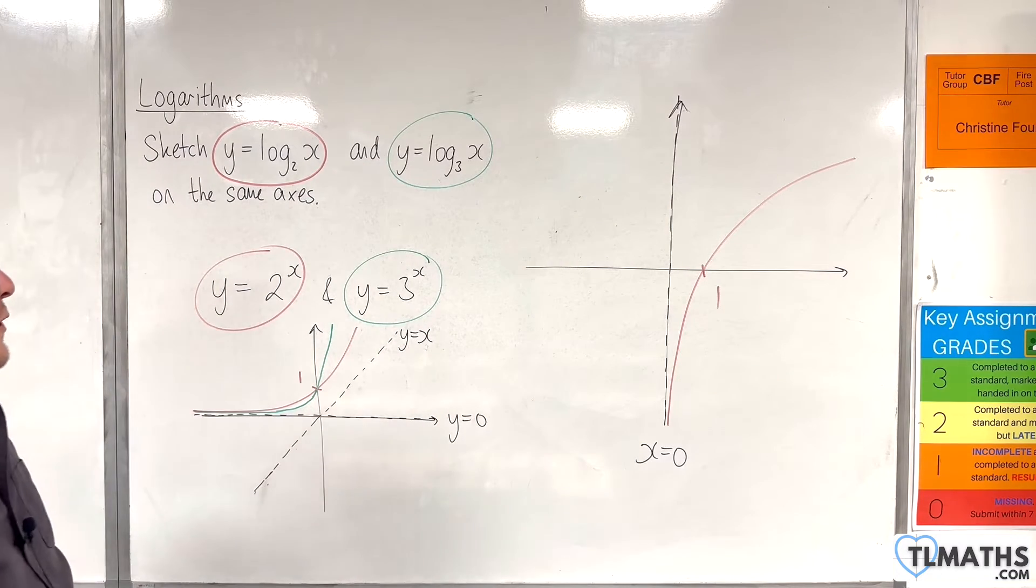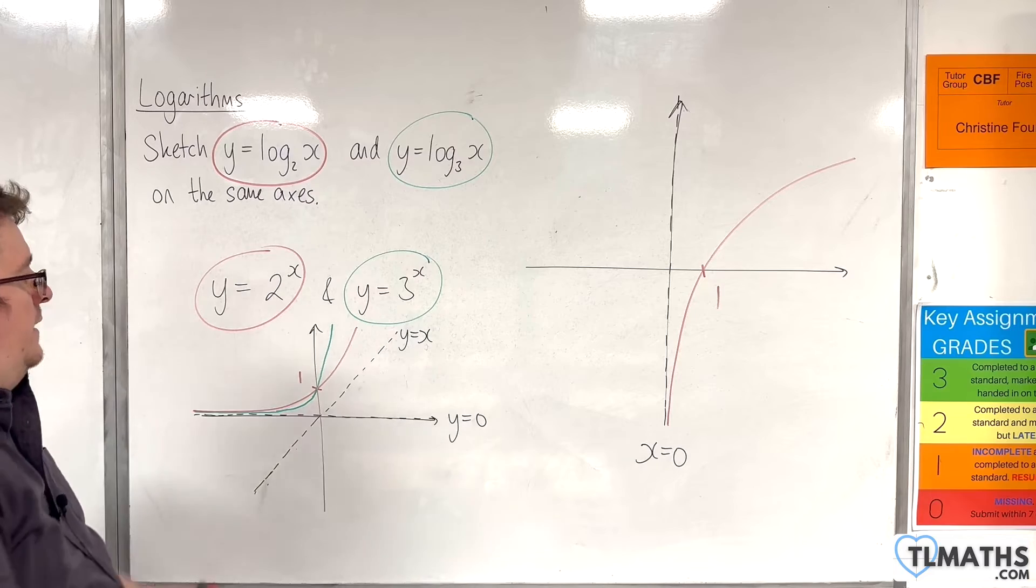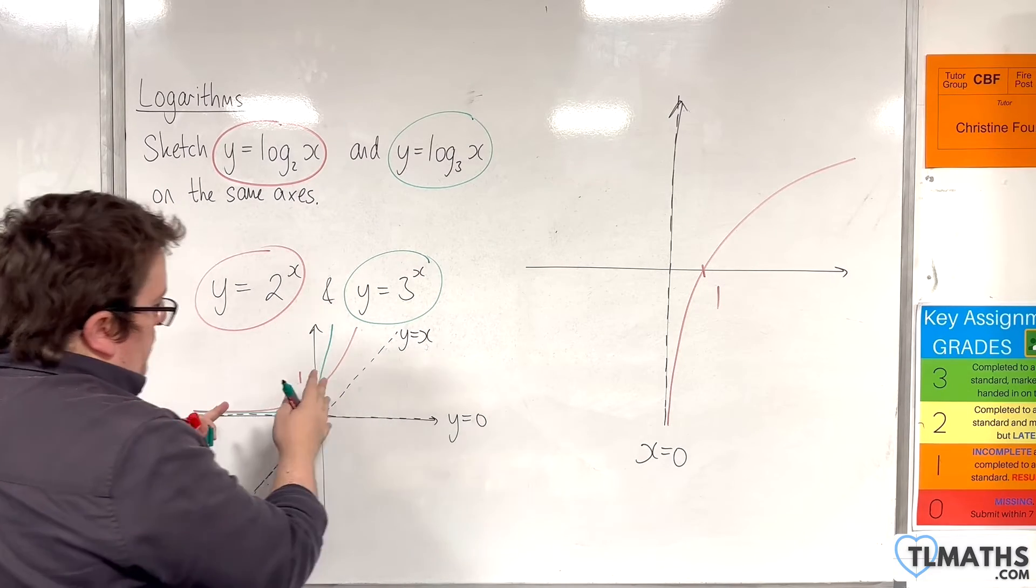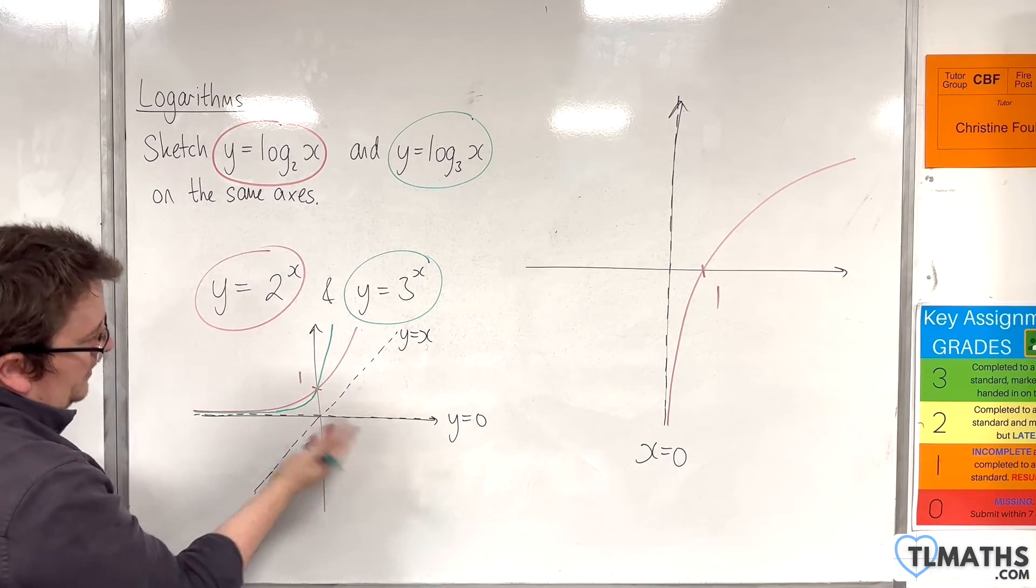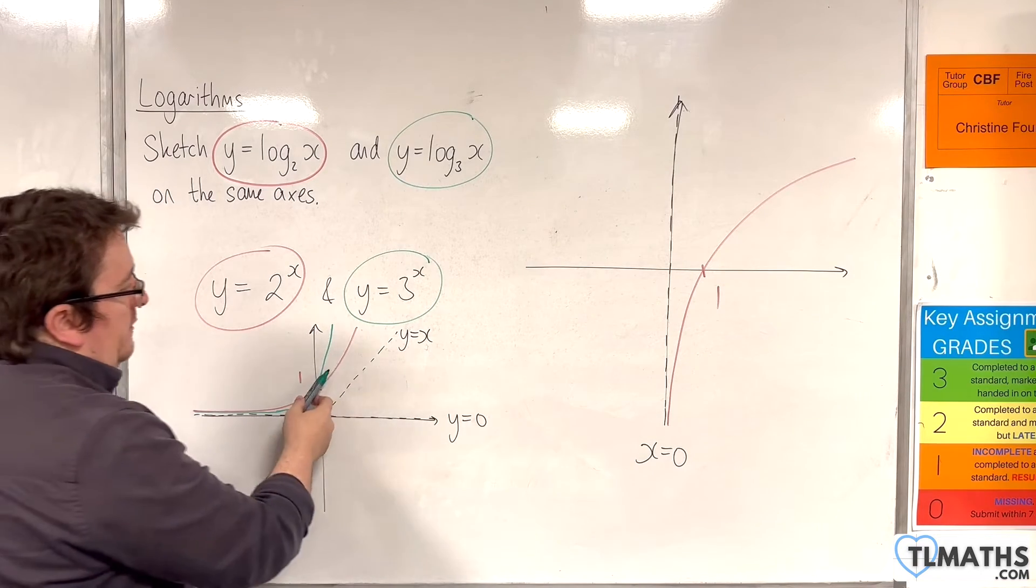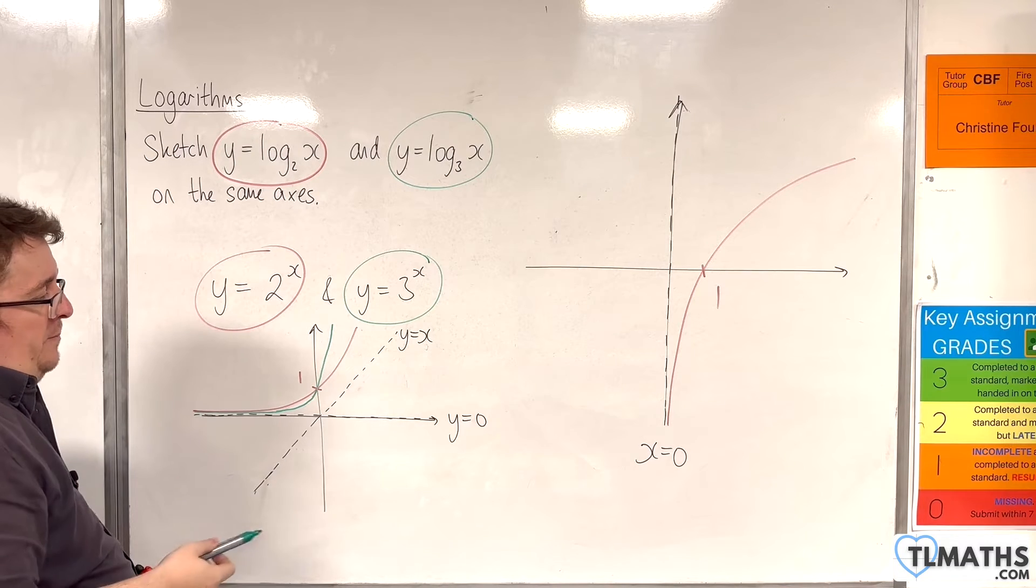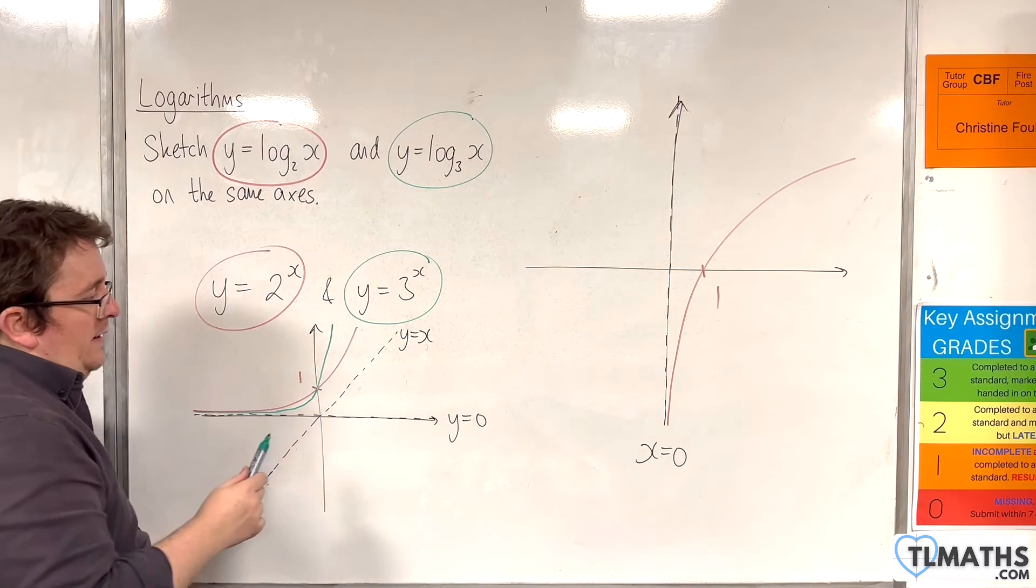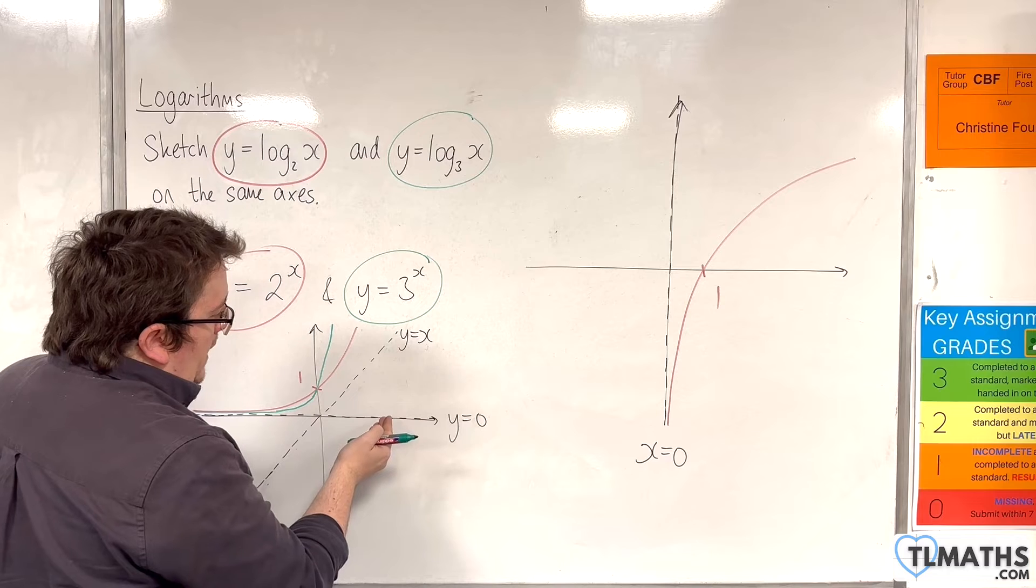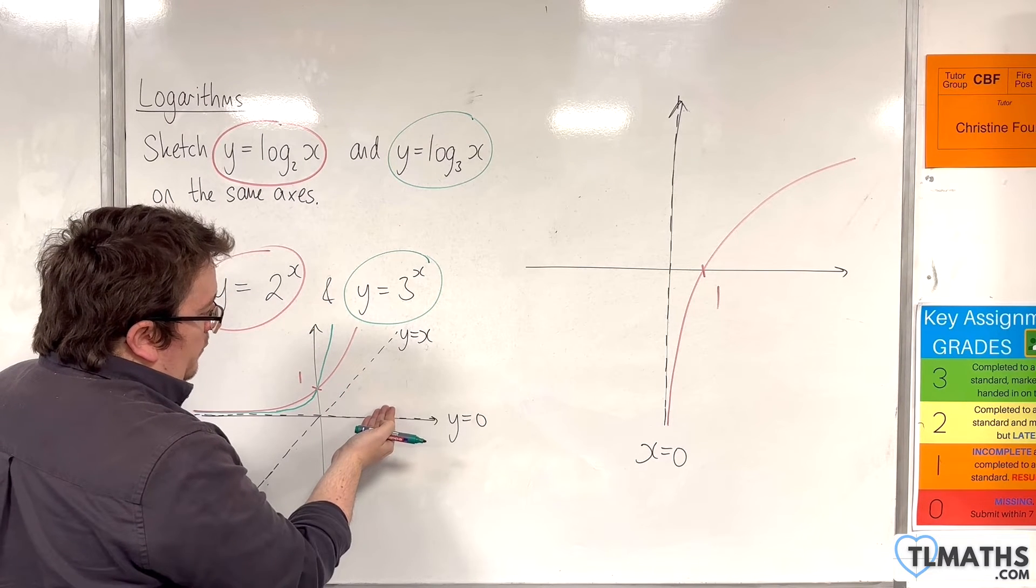Now, as for y equals log base 3 of x, we can see that from this graph, if we were to reflect in that y equals x, then the red curve being closer to the y equals x line must mean that the green curve would be further away on this side as well. So, the red curve would be closer, green curve would be further away.